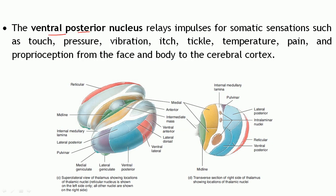The ventral posterior nucleus relays impulses for somatic sensations such as touch, pressure, vibration, itch, tickle, temperature sense, pain, and proprioception — from both the face and the body — toward the cerebral cortex. It receives input from somatic sensory receptors for all these sensations and sends output to the cerebral cortex to make you aware of them.